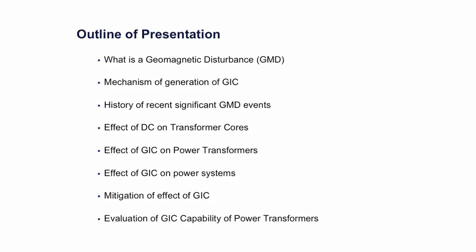I'll first explain what is a geomagnetic disturbance, the mechanism of the generation of GIC, and the history of some recent significant storms. Then, to understand the effect of GIC, I'll go through the effect of DC on transformers first and then the effect of GIC, followed by the effect of GIC on power systems, and then explain some available mitigation methods to reduce the effect of GIC.